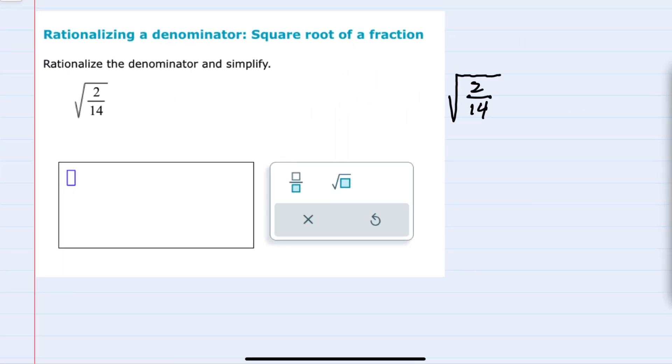In this example we're asked to rationalize the square root of 2 over 14. To rationalize I need to make sure that there is no radical in the denominator.